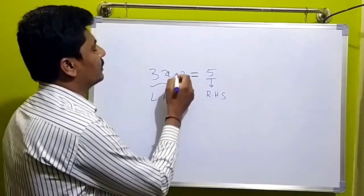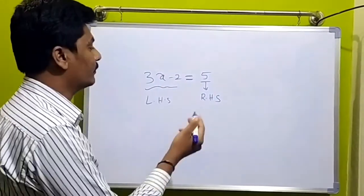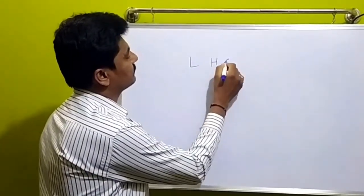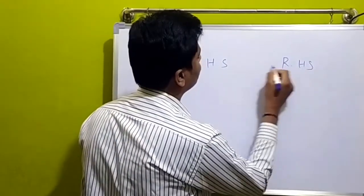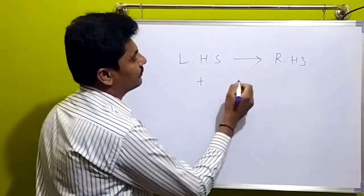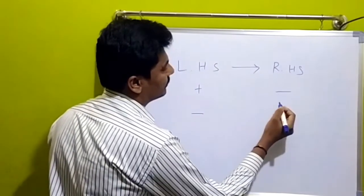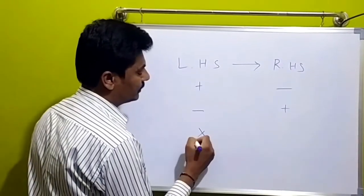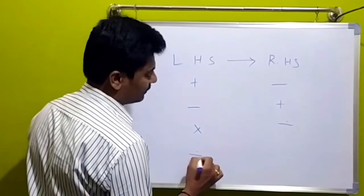The equality symbol is equal to R-H-S. So, we will transform L-H-S and R-H-S. L-H-S is equal to R-H-S. So, in L-H-S is equal to R-H-S.